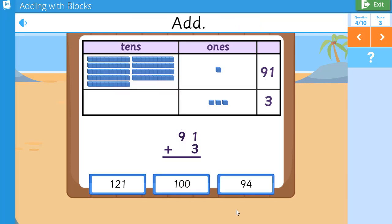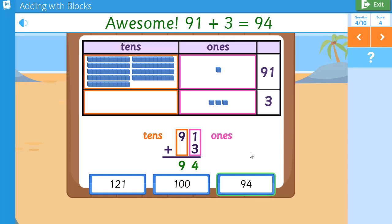Add. 91 plus 3. Awesome! 91 plus 3 equals 94.